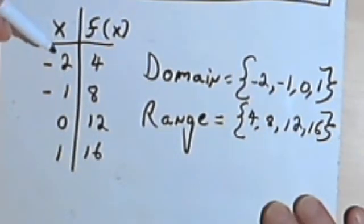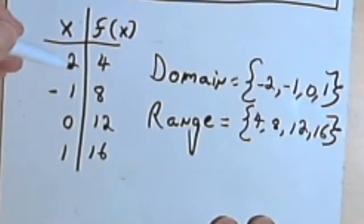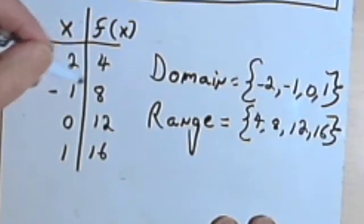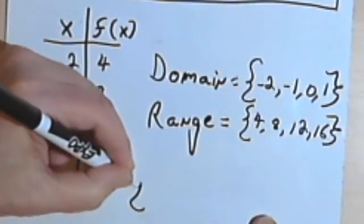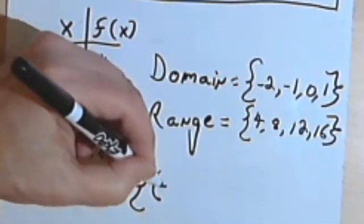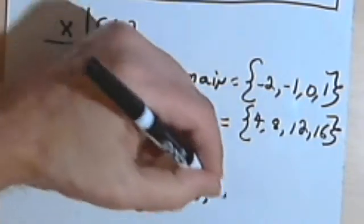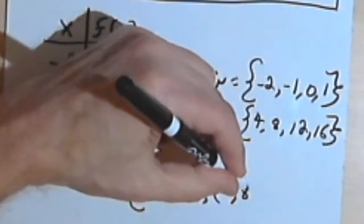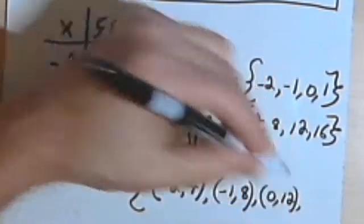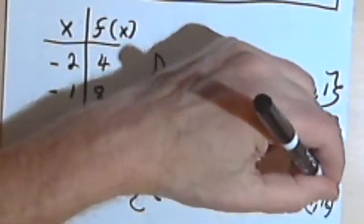One thing to realize, I've been given this table of values in a regular table form, but I could have taken these pairs of values and been given them as a set of ordered pairs. I could have had the ordered pair negative 2, 4, then the ordered pair negative 1, 8, and then 0, 12, and 1, 16.